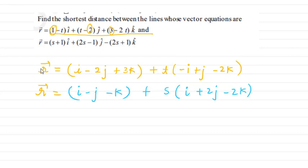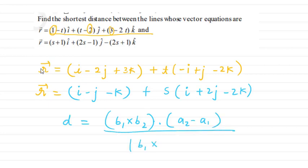Since these are skew lines, use the formula for shortest distance: d = |(b1 × b2) · (a2 − a1)| / |b1 × b2|. Now a1, a2, b1, and b2 are all identified, so you can substitute and compute the shortest distance.